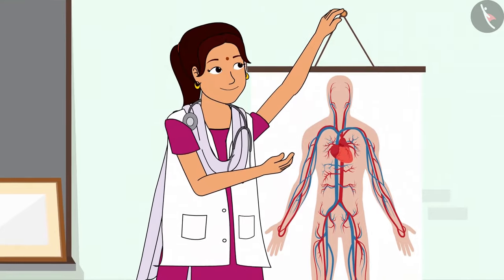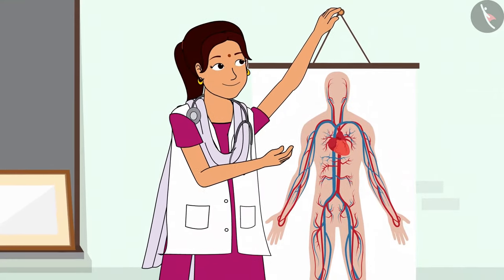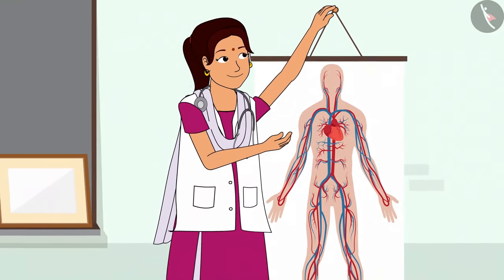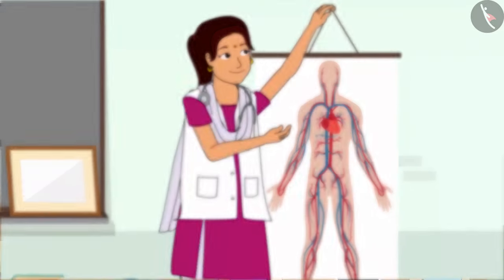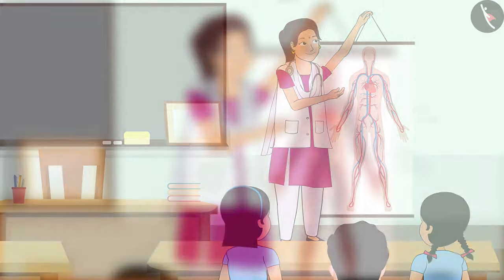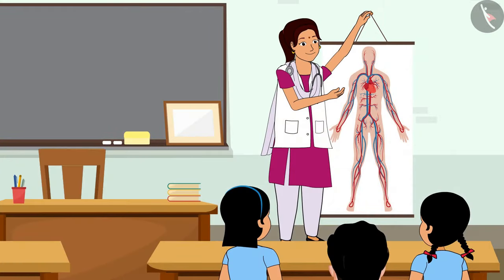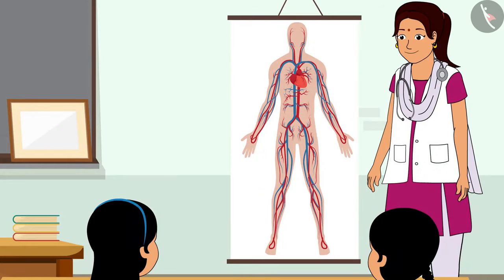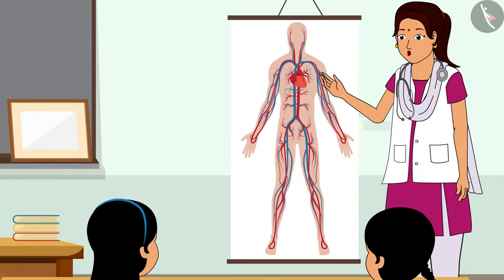Dr. Didi goes and gets a poster of the circulatory system from the biology class. Dr. Didi, what are these blue and red pipe-like tubes? These are the blood vessels, and the heart is in the center.